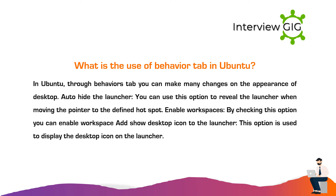What is the use of the behavior tab in Ubuntu? Through the behaviors tab you can make many changes to the appearance of the desktop. Auto hide the launcher — you can use this option to reveal the launcher when moving the pointer to the defined hotspot. Enable workspaces — by checking this option you can enable workspaces. Add show desktop icon to the launcher — this option is used to display the desktop icon on the launcher.